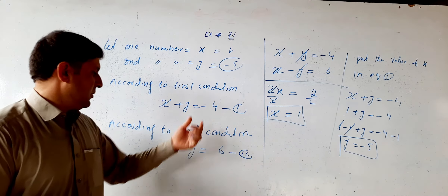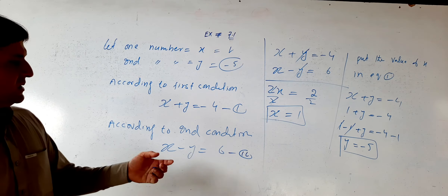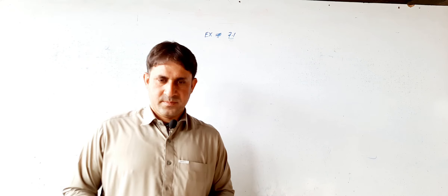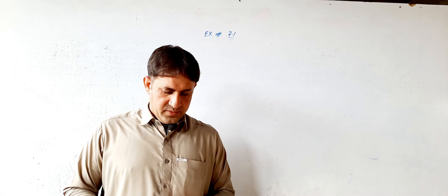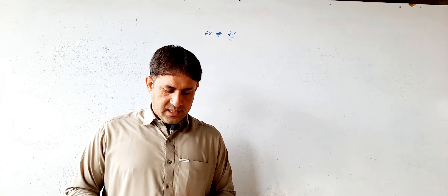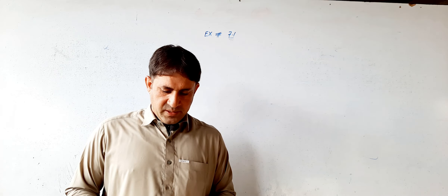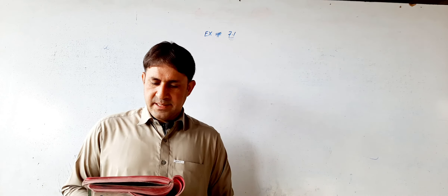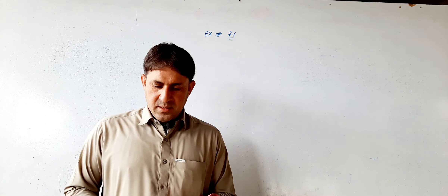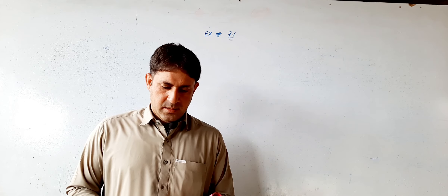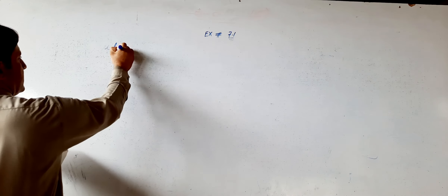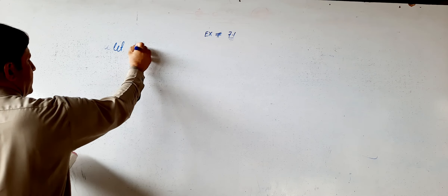Let's verify: sum is 1 + (−5) = −4 ✓, difference is 1 − (−5) = 6 ✓. Now question number four: the sum of three consecutive odd integers is 81. Find the numbers.